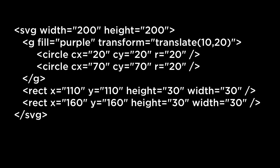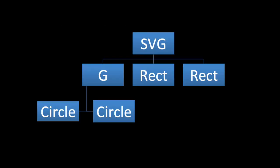Looking again at the hand-coded example, a few things to point out. 1. The parent element is the SVG element. 2. Child elements to the SVG element are the G element and two rectangle elements. 3. The G element and the two rectangle elements are siblings. 4. The G element is the parent to two circle elements. 5. The circle elements are siblings to each other. If we look at it like a DOM tree, we can see which elements are parents, which are siblings, and which are children.